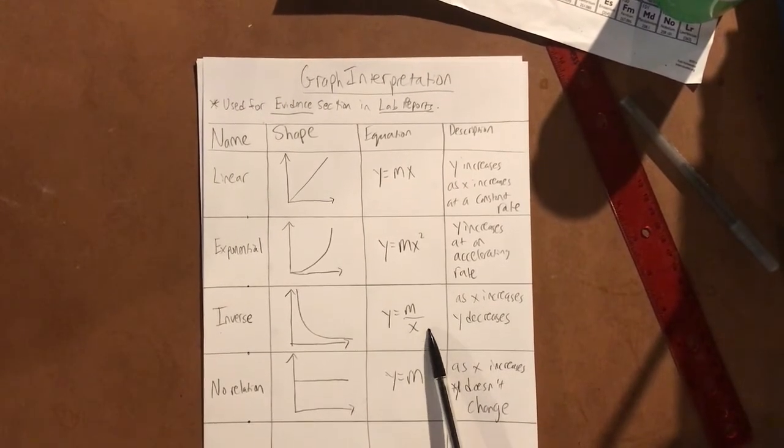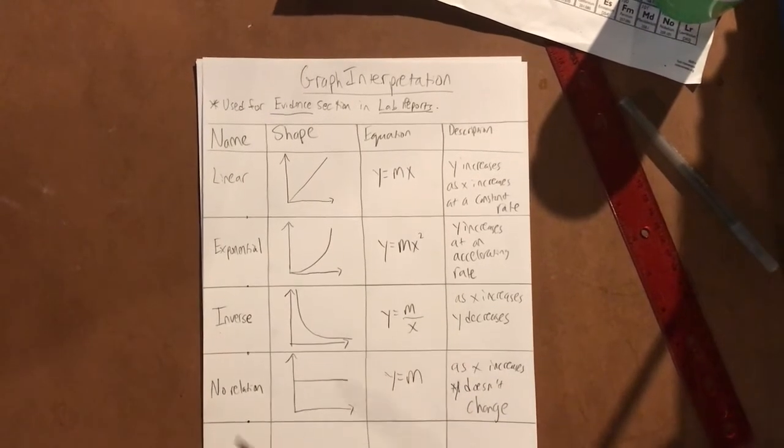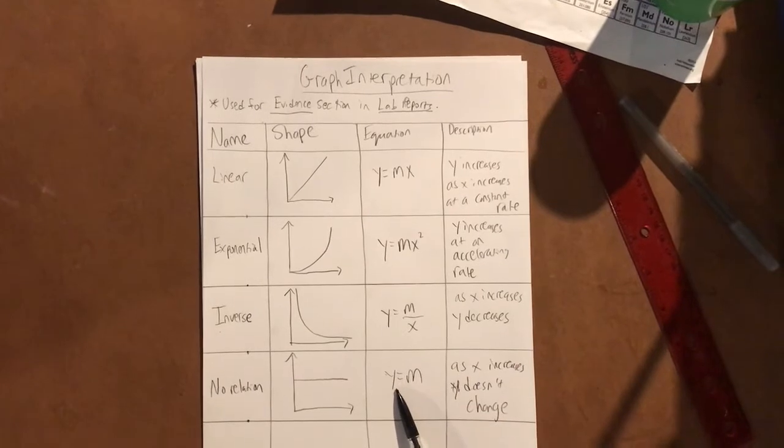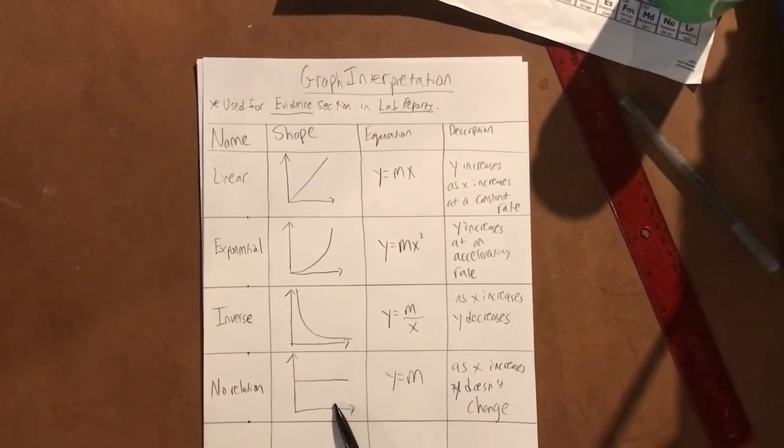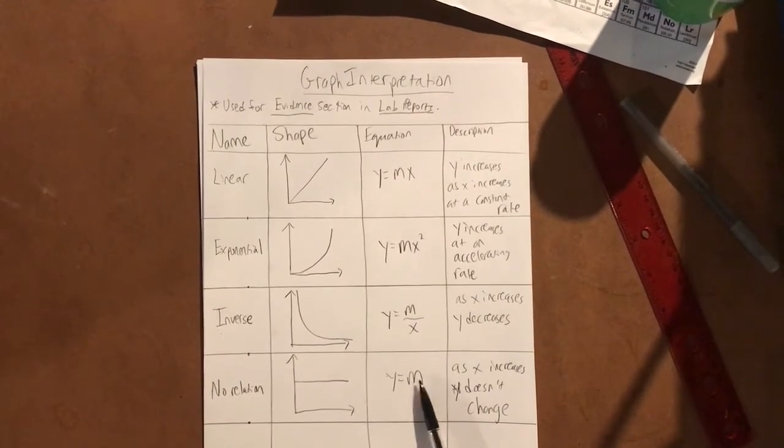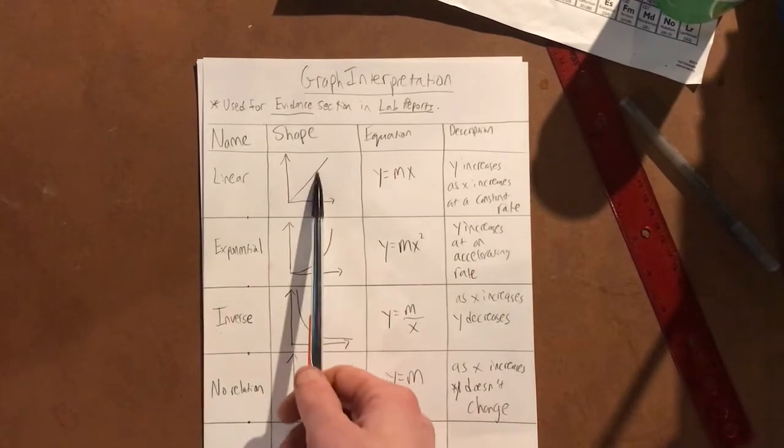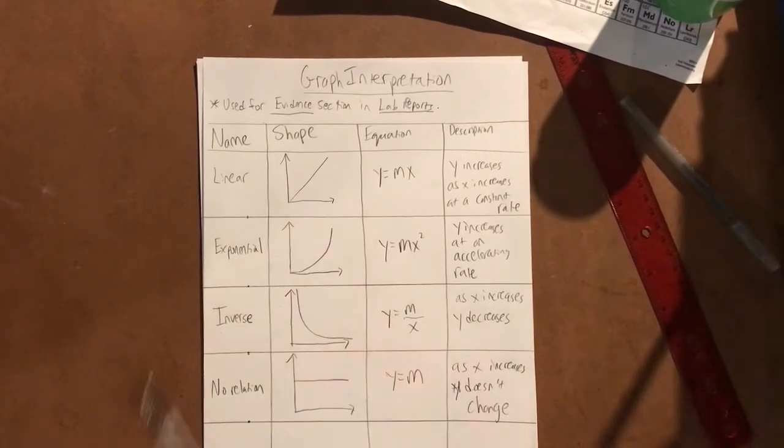X is in the denominator, which makes when x goes up, y gets smaller because it's in the denominator. No relation doesn't even have an x because no relation basically is the idea that x has no effect on y at all. It's just y equals some number and y stays that number the whole time. When you do a graph, you're gonna recognize, 'oh that looks linear,' and then you just use that row as your idea.